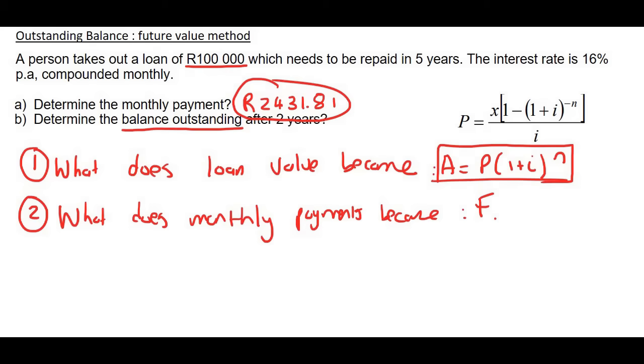So let's go do number one. So what does the loan become? So that's easy. We're just using the normal grade 11 formula. But now we only want to do it for two years. That's going to be two times 12, which is 24. And that'll give us a value of 137,421 Rand and 88 cents.